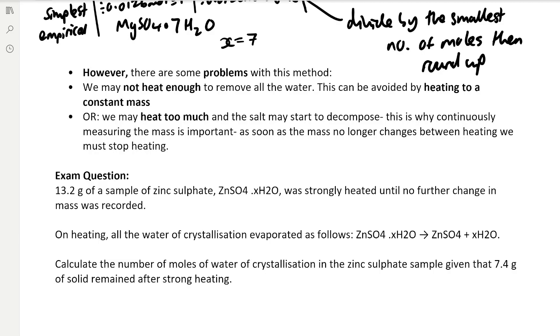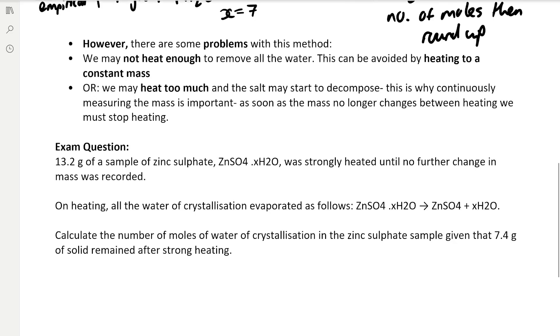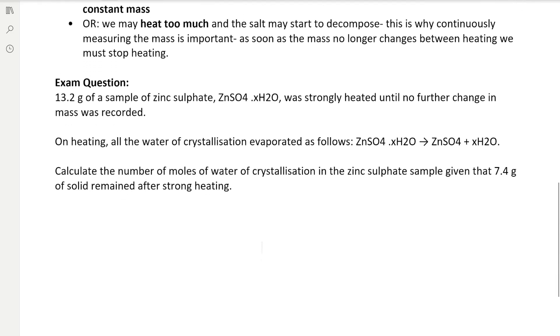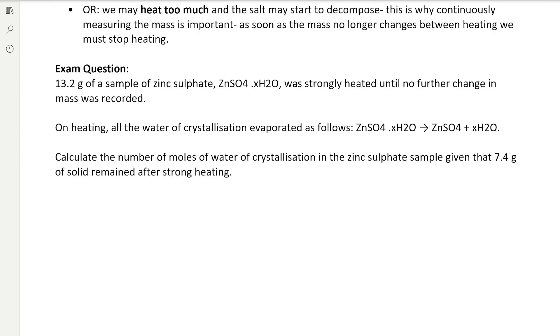We've got an exam question to go through. 13.2 grams of a sample of zinc sulfate, ZnSO4 dot x H2O, was strongly heated until no further change was recorded. On heating, all the water of crystallisation evaporated as follows: ZnSO4 dot x H2O goes to ZnSO4 plus x H2O. Calculate the number of moles of water of crystallisation in the zinc sulfate sample, given that 7.4 grams of solid remained after strong heating.